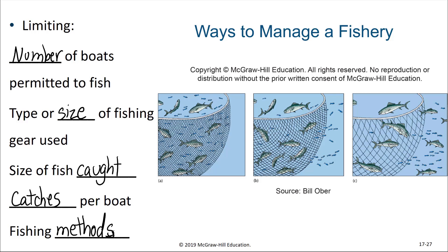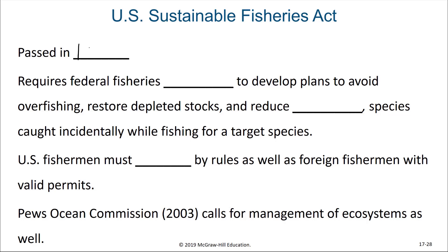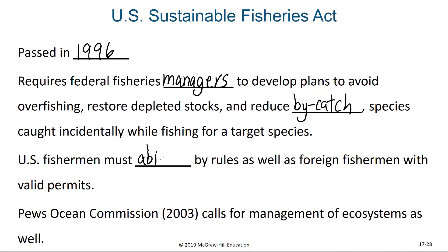In 1996, the U.S. Sustainable Fisheries Act was passed. This act required federal fisheries managers to develop plans to avoid overfishing, to restore depleted stock, and to reduce bycatch — organisms that are caught other than the targeted species and often have little to no commercial value, ending up dumped back into the ocean, usually dead and dying. The act required all fisheries to be managed sustainably, and U.S. fishermen as well as foreign fishermen with valid permits fishing within the U.S. must abide by the rules. The Pew Ocean Commission also calls for management of ecosystems, in addition to just fishery stocks.